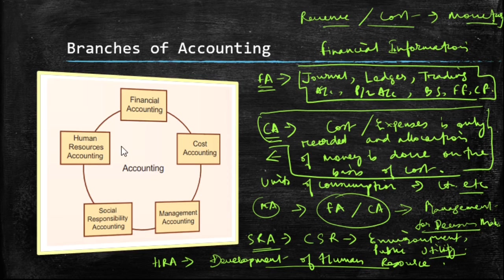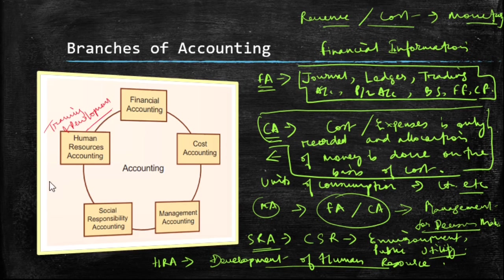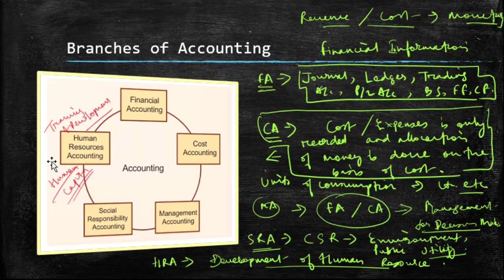Lastly, when we say human resource accounting, all the transactions related to the development of human resources in a firm are maintained. This basically refers to training and development expenses. Here, humans are regarded as resources and capital. Whatever expenses are borne by the company in training the human resource are considered under human resource accounting. So financial accounting focuses only on financial transactions, and cost accounting focuses on recording cost and expenses, which is more preferable in manufacturing concerns.